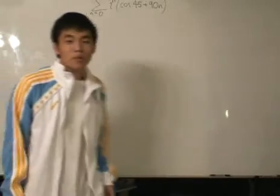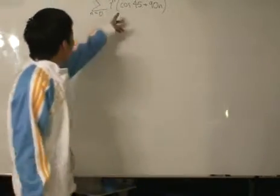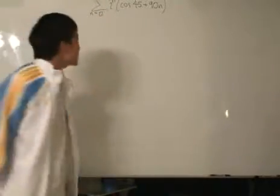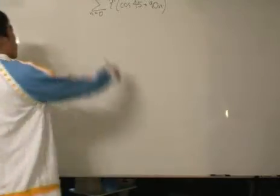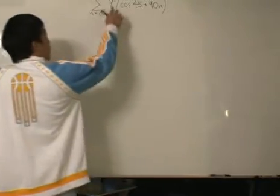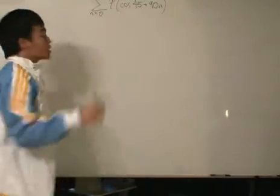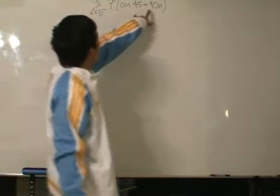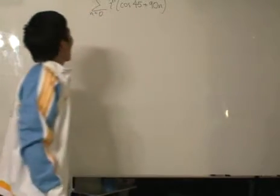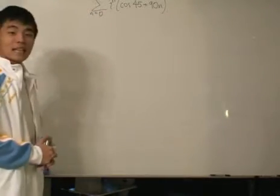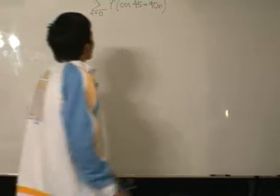Hi, so we're going to go to some of the more difficult complex number questions for the Olympiad AMC and this is one of them: sum from n equals 0 to 40 of the term i (imaginary number) to the power of n times cosine of 45 plus 90n. Wow, that's a big statement and we need to find the answer for that.